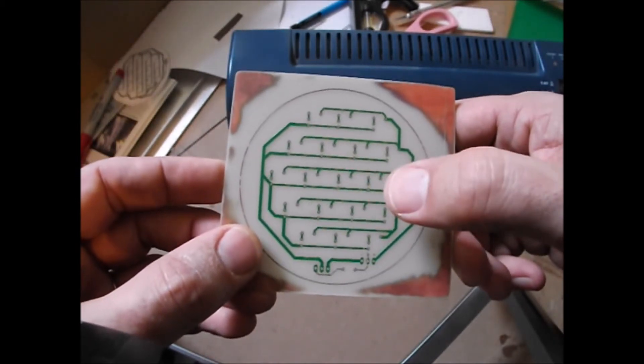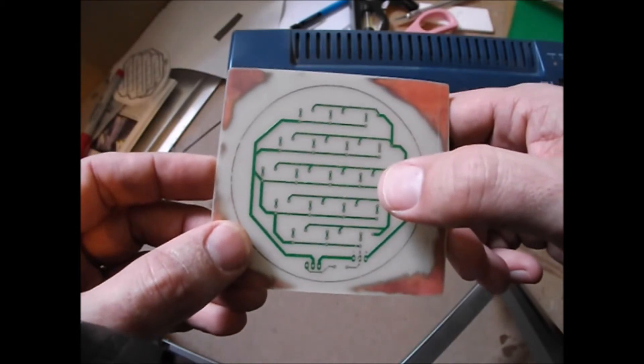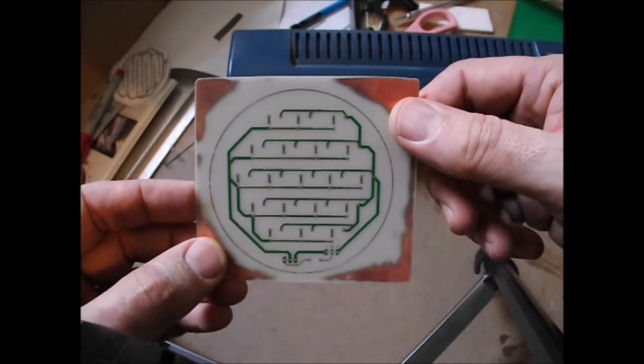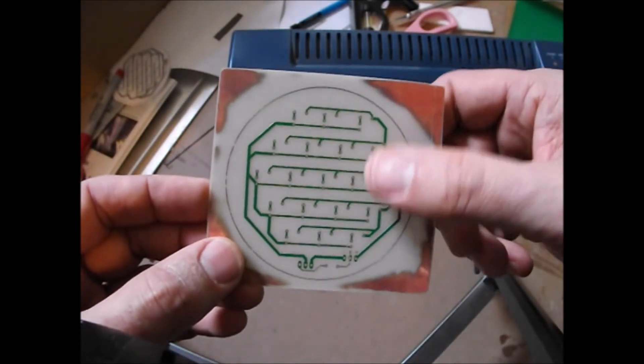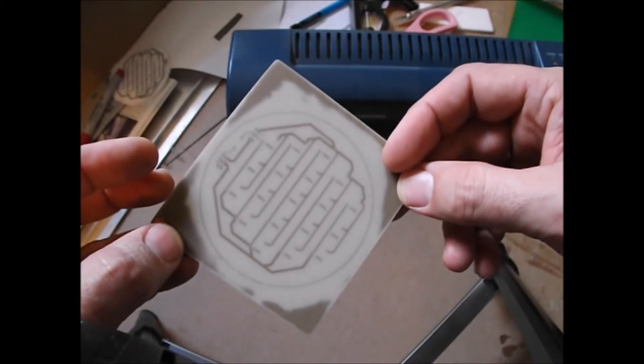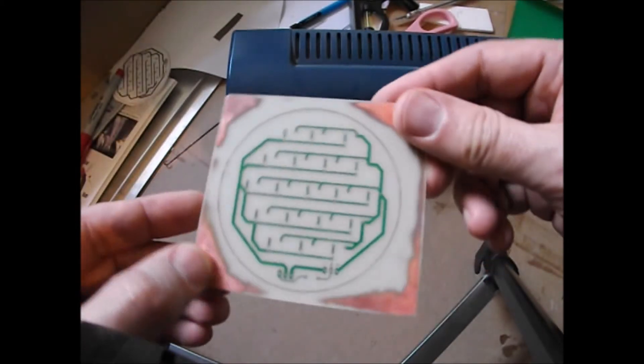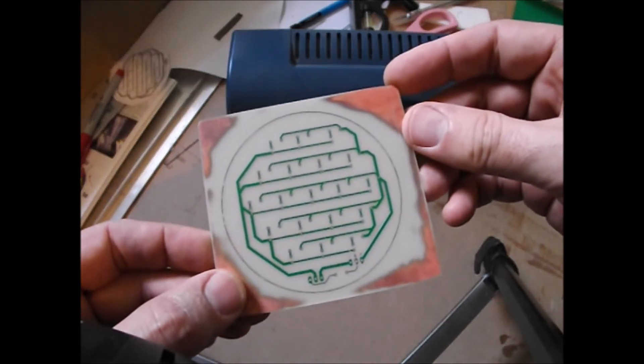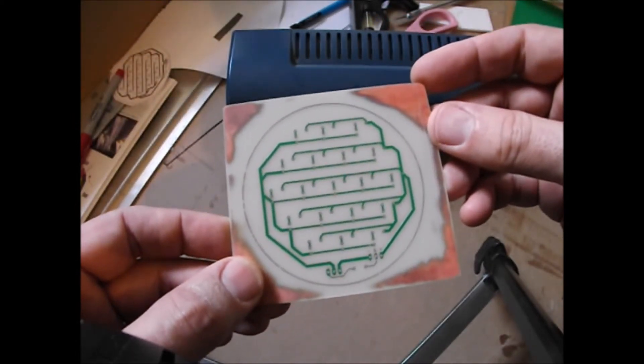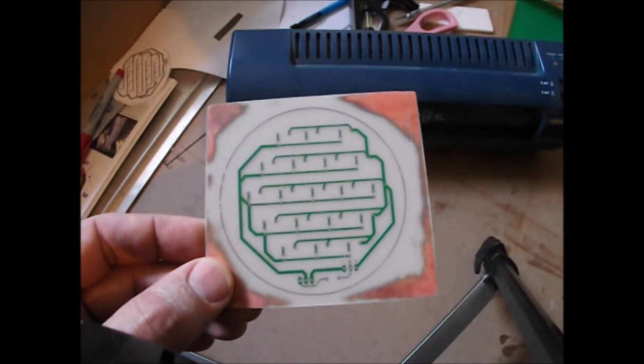And then it's for through hole parts like this board uses, it's drill them out and insert them from the top and solder them on. And there you have it. So, that's it.